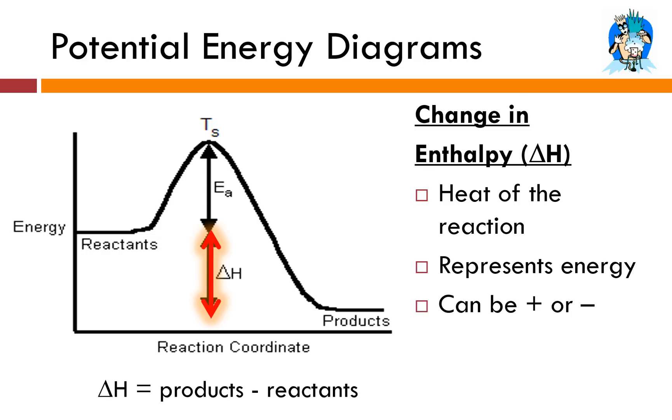And we always solve for delta H using products minus reactants. Now we don't have any numbers on this potential energy diagram, but I bet we can figure out whether the delta H or the change in enthalpy for this reaction is going to be positive or negative. In this case, I've got my reactants right here. It's always going to be to the left and my products will always be to the right. If I take the value of my products and I subtract the value or the energy, I should say, at this point, stay away from enthalpy, of the reactants, hopefully you recognize that products have less energy than the reactants. So a small number minus a big number, in this case, we'd get a negative value for delta H.